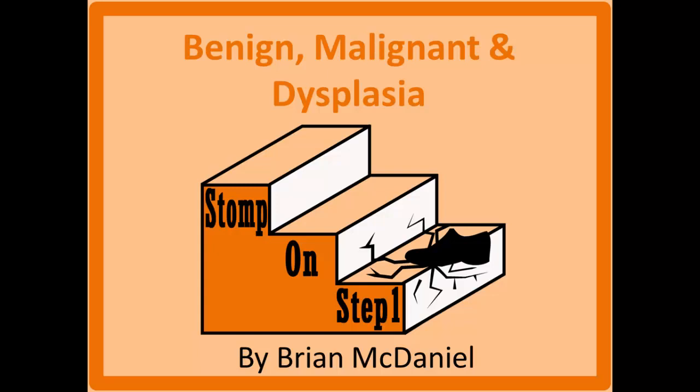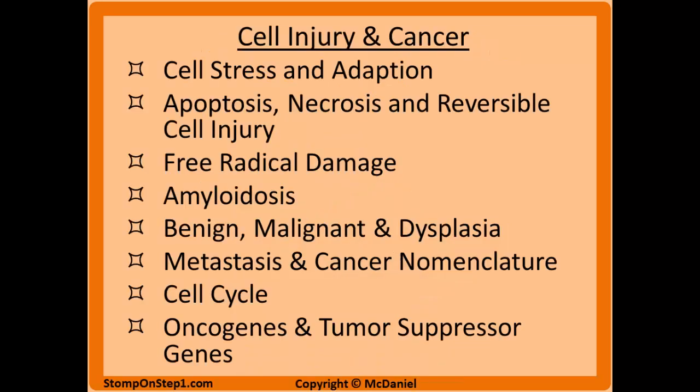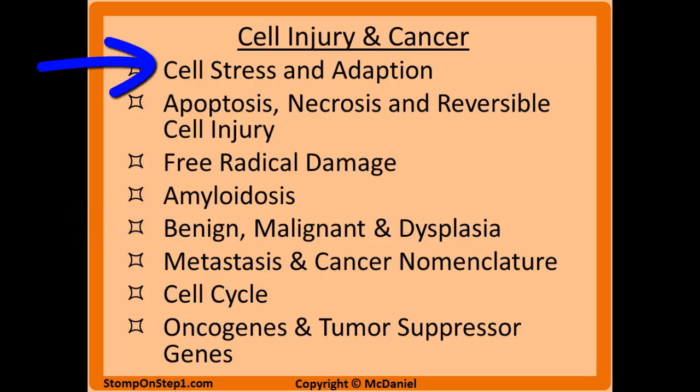Distinguished future physicians, welcome to Stomp On Step 1, the only free video series that helps you study more efficiently by focusing on the highest yield material. In this video we're going to be covering the differences between benign, malignant, and dysplasia. This is the fifth video in my series covering cell injury and cancer. I want to point out the first video in this section covering cell stress and adaptation, things like hyperplasia and dysplasia, because if you don't understand those concepts, this video will be tough to follow.